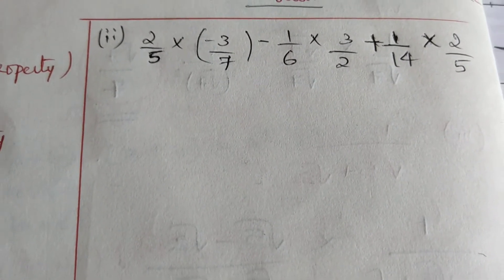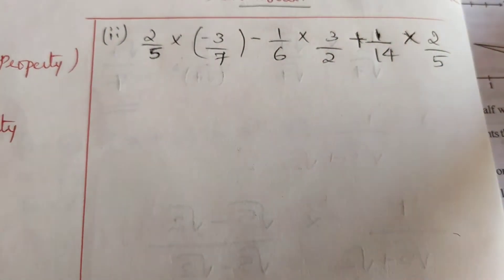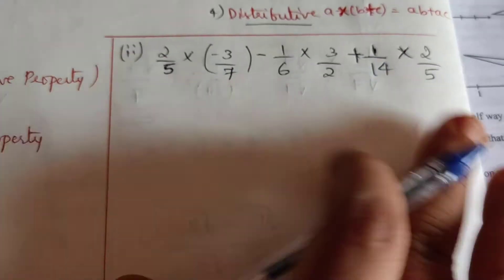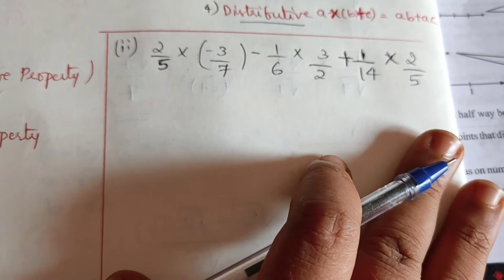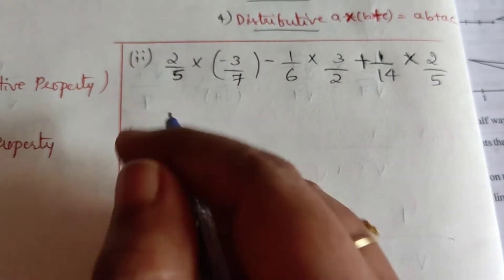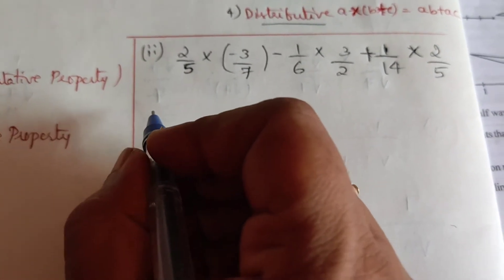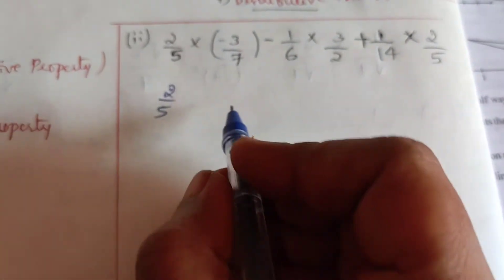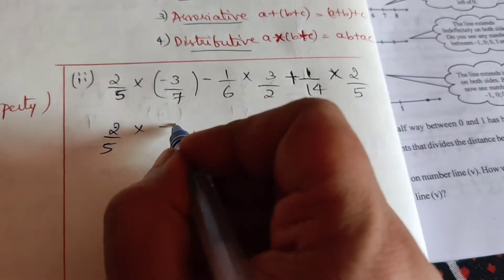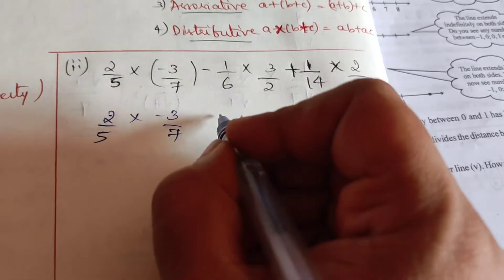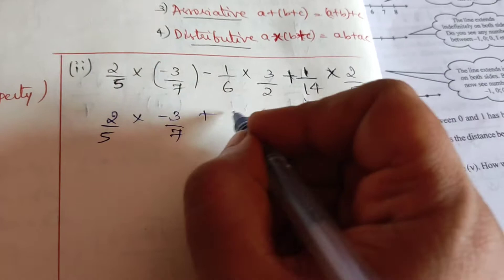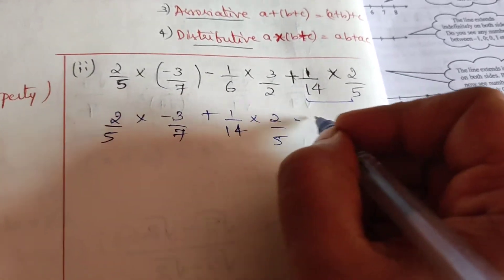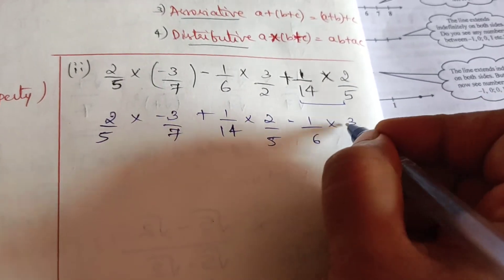Using appropriate identity, now there is 2/5 in common you see on both the sides. So let us use commutative property and rearrange them: 2/5 × (-3/7), this I will take it here, and -1/6 × 3/2 I will keep it aside.